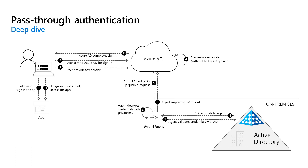The username can be either the on-premises default username — usually the UPN or user principal name — or another attribute configured in Azure Active Directory Connect, also known as the alternate ID. The on-premises Active Directory domain controller evaluates that request and returns the appropriate response — whether that's a success, failure, password expired, or user locked out — back to the agent. The authentication agent, in turn, returns this response back to Azure Active Directory.